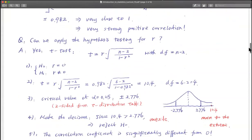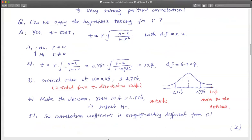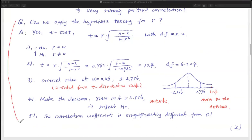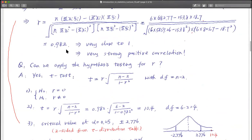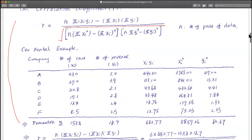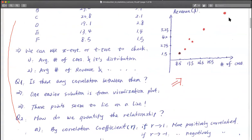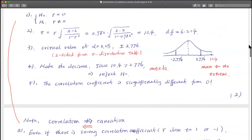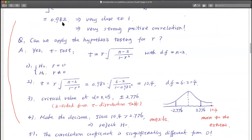The following part I do require: this is the hypothesis testing for the correlation coefficient. The R we got is 0.982, based on only six companies — six samples. So can we say this is really significantly different from zero? We are not sure. We want to do statistical hypothesis testing with five steps to see if R, even with six samples, is significantly different from zero.